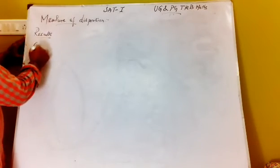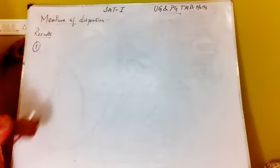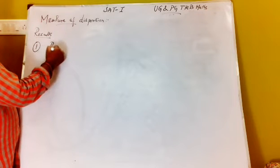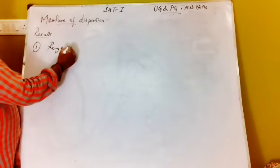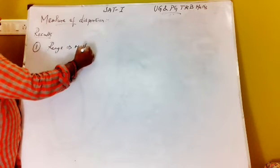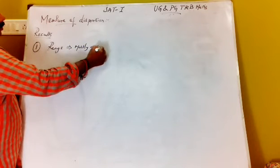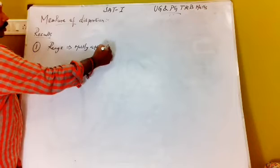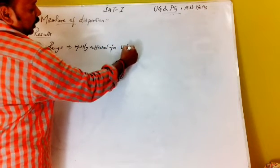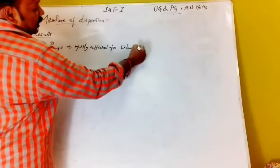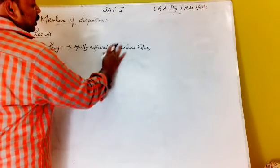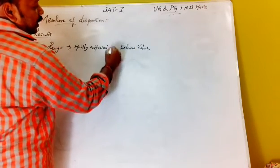Now we are going to do 5. We are going to do the range. Range is mostly affected — that is mostly affected by extreme values. There is a lot of effect for extreme values. Range is mostly affected by extreme values.